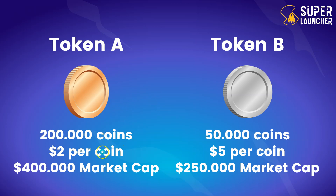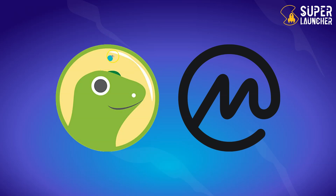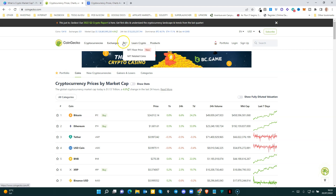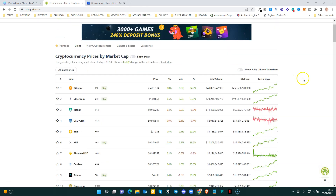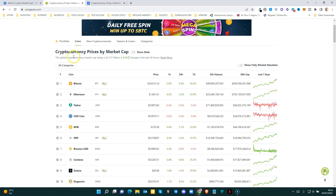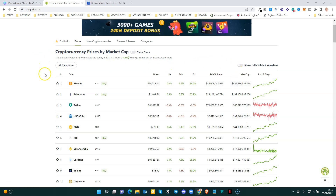So if you want to know the market cap of a specific token, do you need to do all these calculations? No, because you can use sites like CoinGecko or CoinMarketCap, which will give you this information. Here you have CoinGecko, and you see a list of cryptocurrencies sorted by market cap.